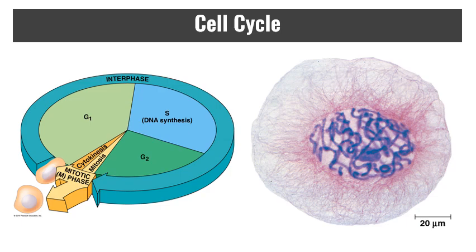The actual mitotic phase is the division process: mitosis is the division of the nucleus, and cytokinesis is the division of everything else. G0 is a non-dividing state — some cells leave this division process and never divide again. Something like a nerve cell or a muscle cell will go into G0 for the extent of their life, while some cells, like those in the liver, can enter and leave G0 as needed, which is what allows the liver to regenerate.